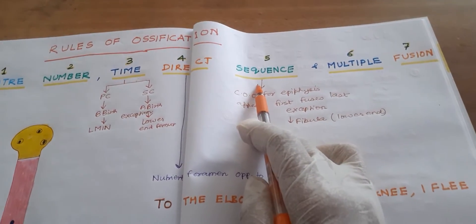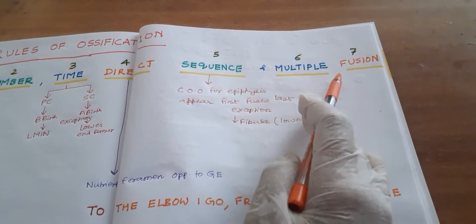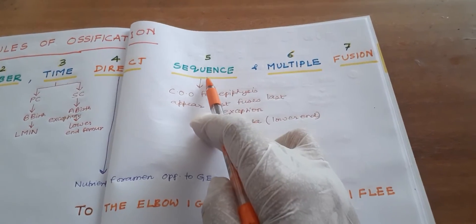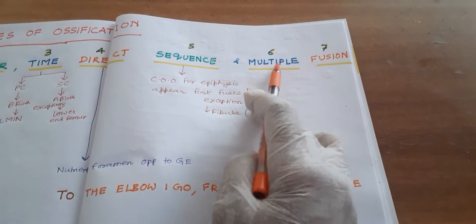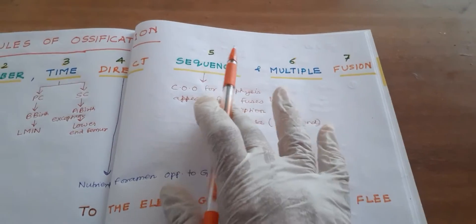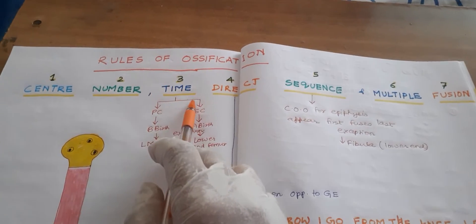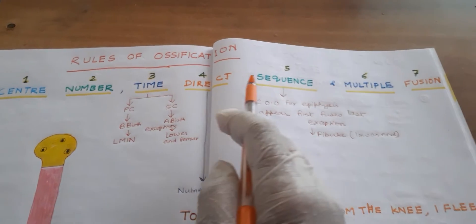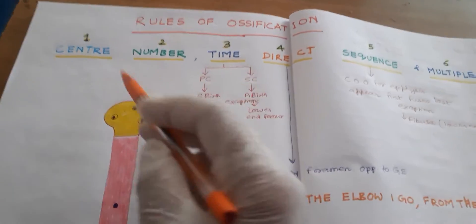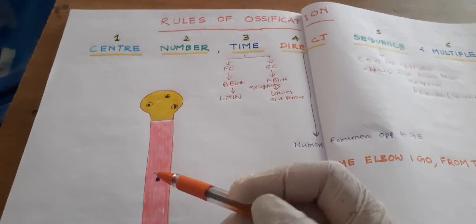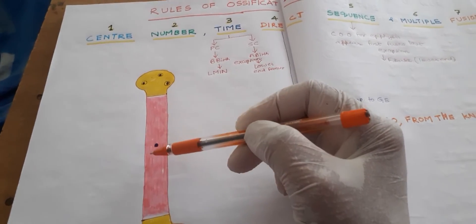Your sequence — that you will come first — and multiple fusion. If you stand first, there will be lots of friends wanting to fuse with you, lots of friendship after that. So: center number, time, direct, sequence, and multiple fusion. First coming to center — that is the primary center of ossification.